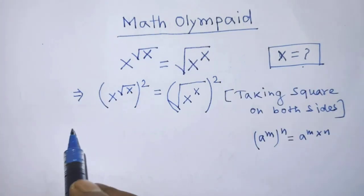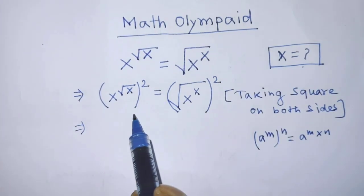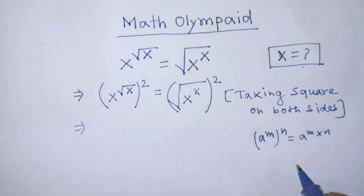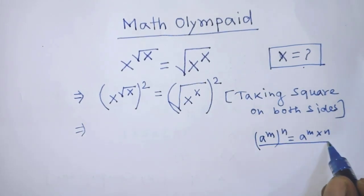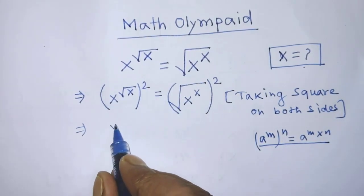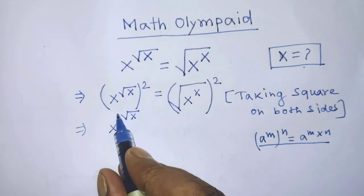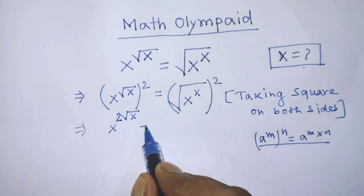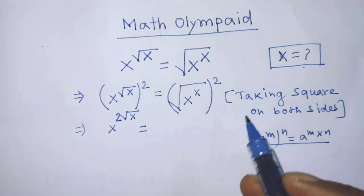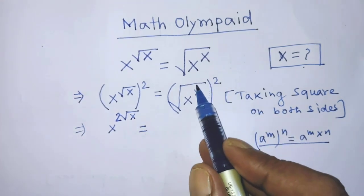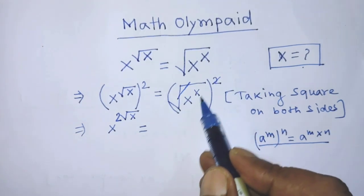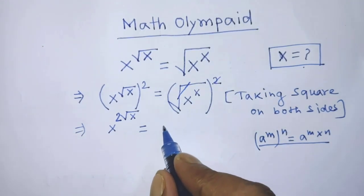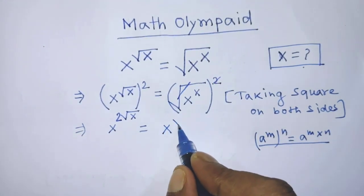After that, to simplify the left hand side of this equation, we have to apply this formula. According to this formula, it will be x to the power 2 times square root of x. On the right hand side, we can cancel square root and square, then it will be x to the power x.